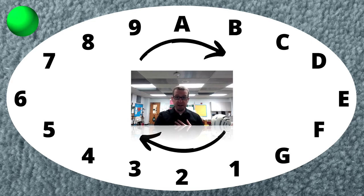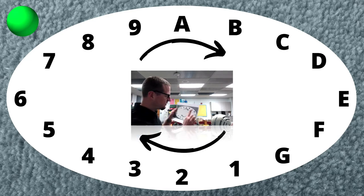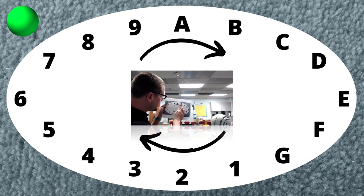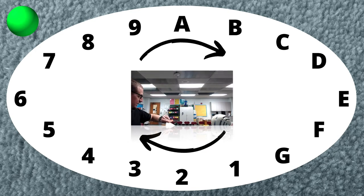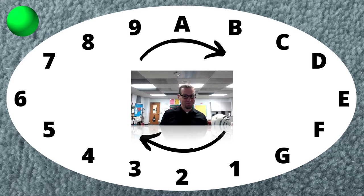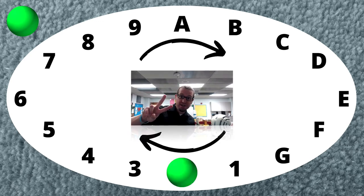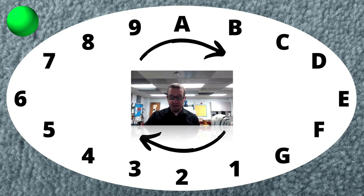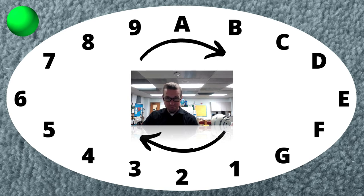One, two — pointing to A, go. Fruits and vegetables, fruits and vegetables, I will eat them every day, hey. Fruits and vegetables, fruits and vegetables, make me want to shout hooray, hooray. Chop, chop, chop, slice, slice, slice, great, great, great, dice, dice, dice. [music continues] Fruits and vegetables, fruits and vegetables, I will eat them every day, hey. Fruits and vegetables, fruits and vegetables, fruits and vegetables. Where were you? Did you stop on five?